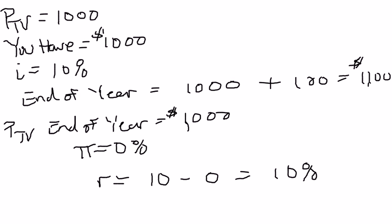What I hope you get out of this short video is that the real interest rate is the reward to savings in terms of how much stuff you get from deferring consumption for a year, whereas the nominal interest rate is how many extra dollars you get from deferring consumption. Those two rewards can differ based upon the inflation rate. Thank you very much — I'll talk to you guys soon.